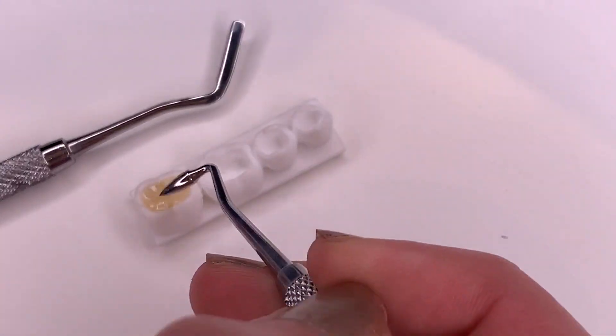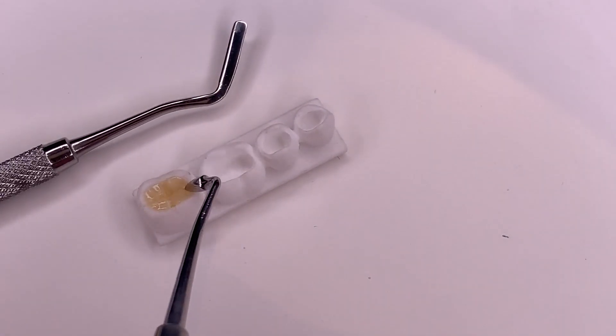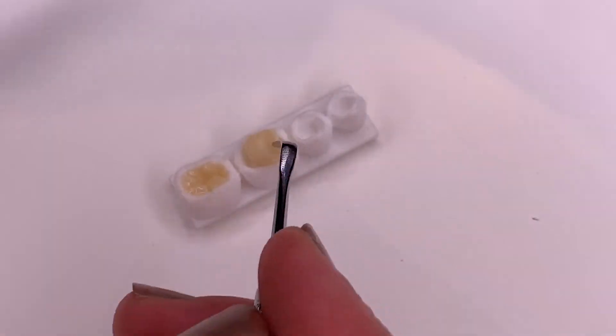Since this was me practicing the morphology of a tooth, I decided to skip that step for the second tooth I was practicing on and just place one big blob of composite smack bang in the tooth.